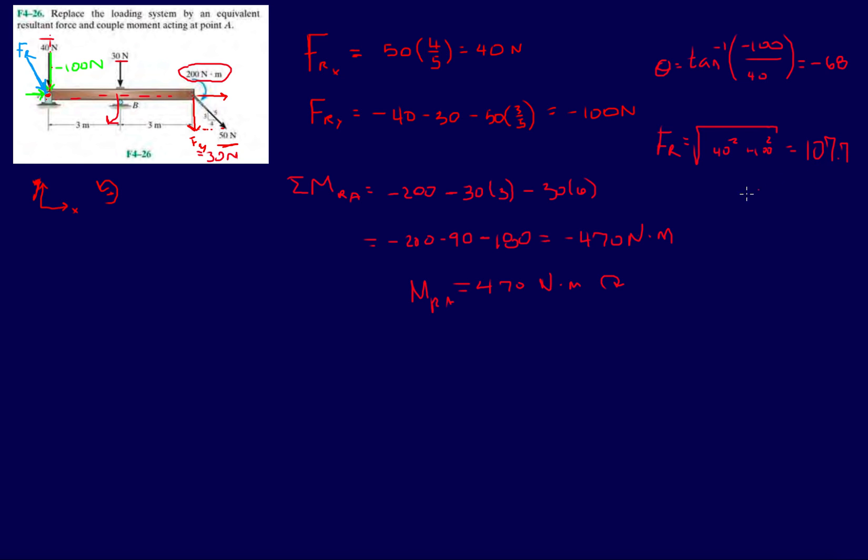And then the resultant is 40 squared plus 100 squared, that's 107.7. So now let's look at a new structure. This is our new structure. Let's get the roller halfway through, let's get the hinge over here. Let's pretend that hits the ground. And now I've replaced every force and every moment in here with a resultant force like this of 107.7 Newtons, with a couple moment that's going like this of 470 Newton-meters.